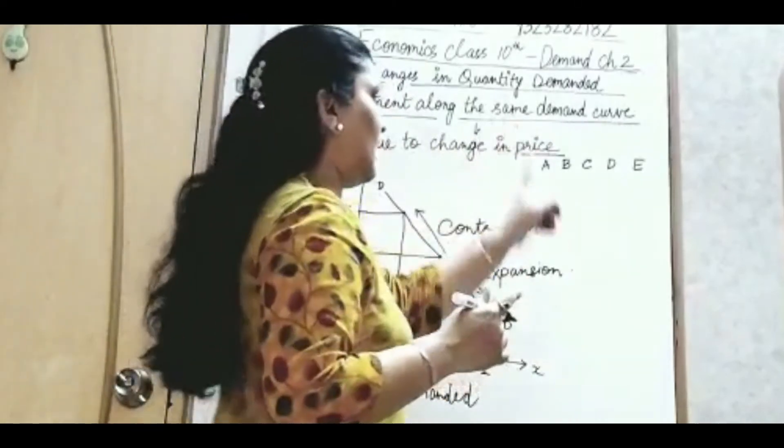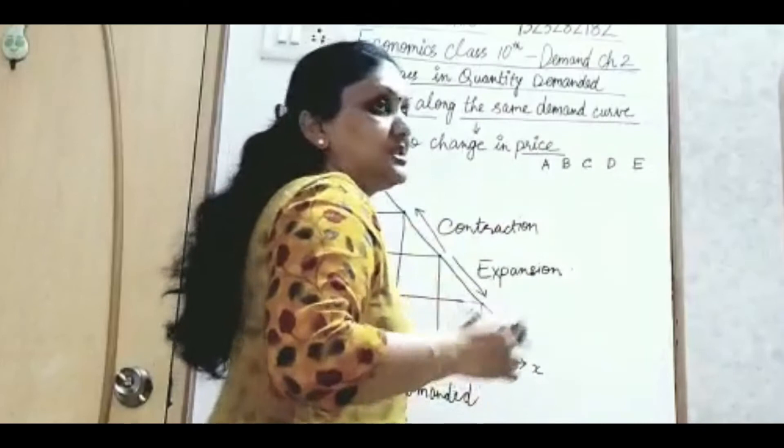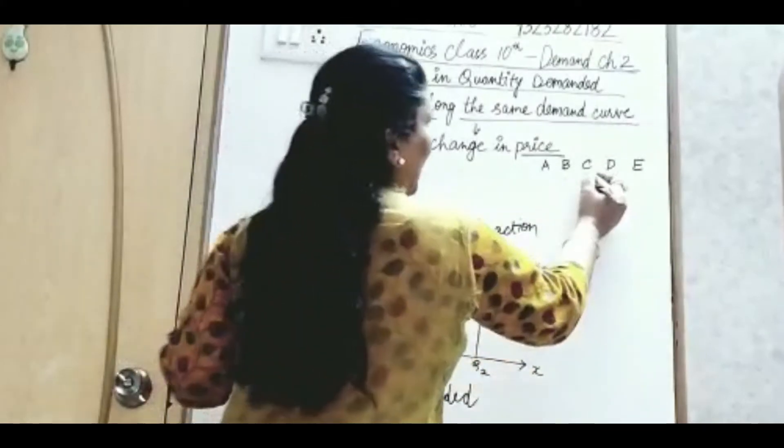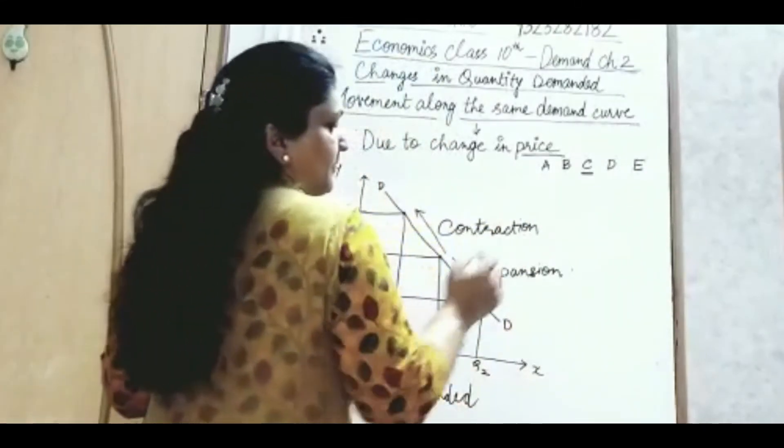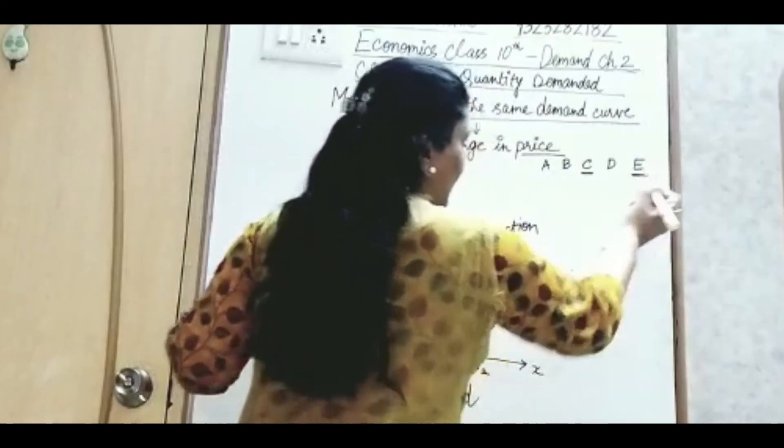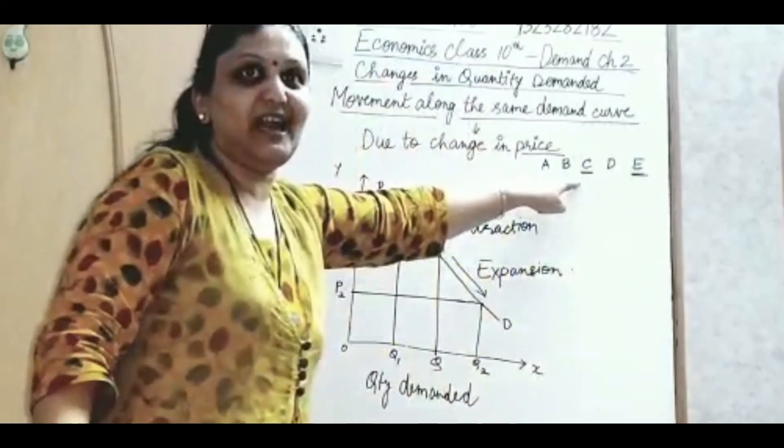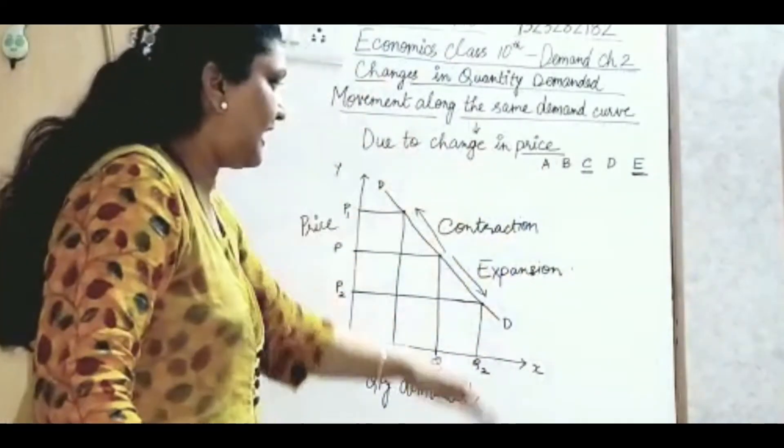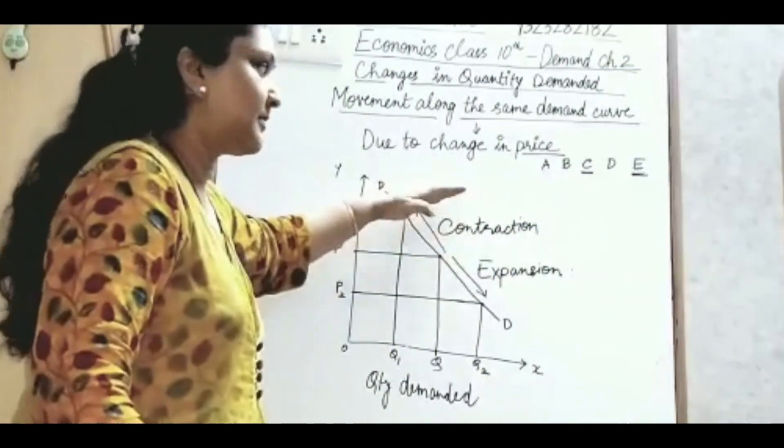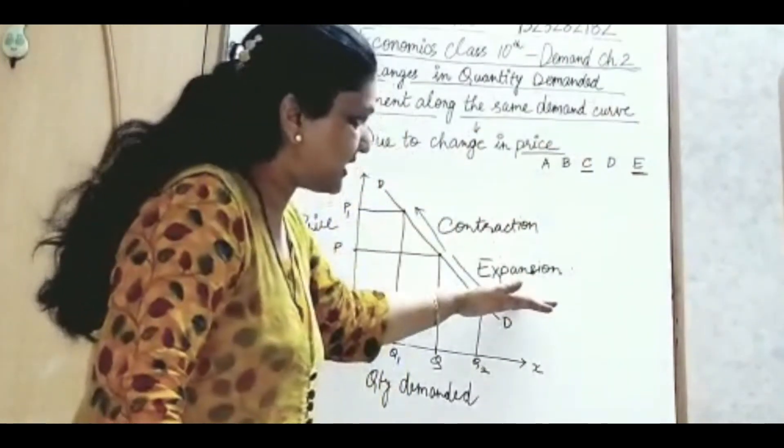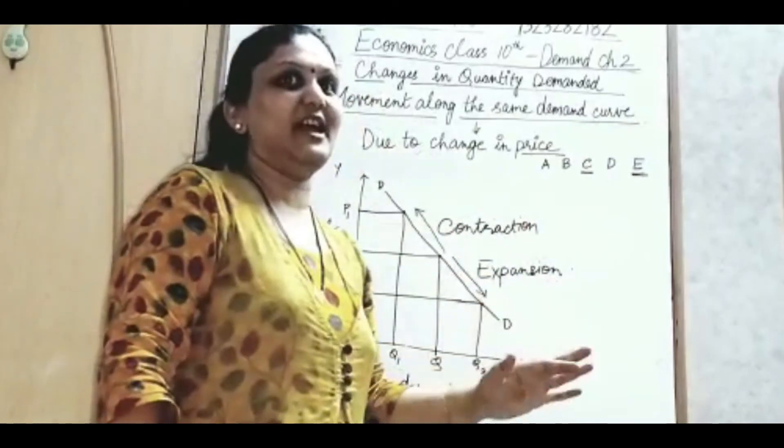why have I written here A, B, C, D, E? सबको बता है A, B, C, D, E. पहले क्या आता है? C. उसके बाद क्या आता है? E. तो पहले C आ रहा है, तो पहले line पे contraction आएगा. उसके बाद E आ रहा है, तो उसके बाद नीचे की side में expansion आएगा.